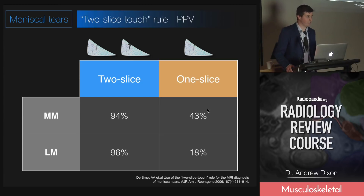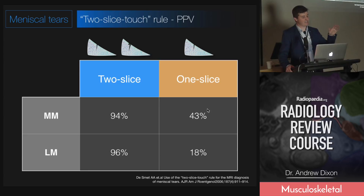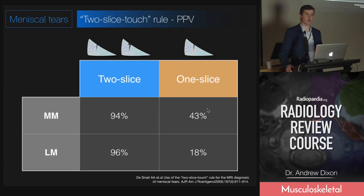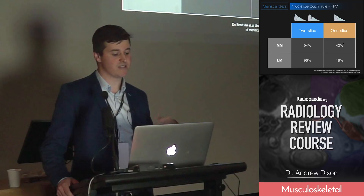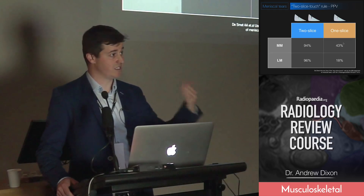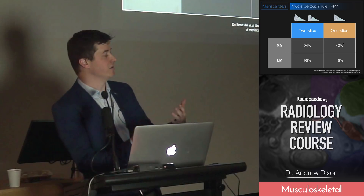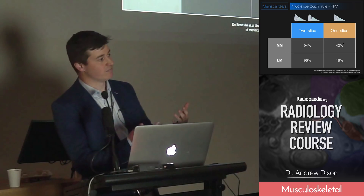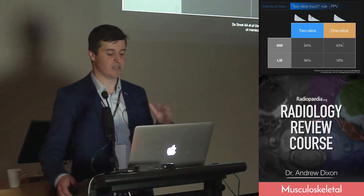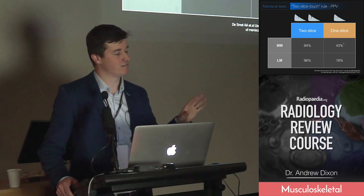You probably shouldn't be calling a meniscal tear on MRI unless you can see the signal abnormality extending to the surface — either the superior surface, inferior surface, or inner free edge — on at least two slices. Those two slices can be in the same plane, two contiguous slices, or you can see one on the sagittal and one on the coronal. They don't need to be the same plane, but you need to see it twice.